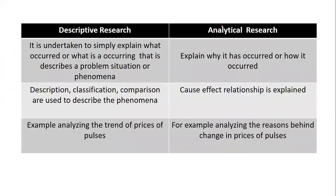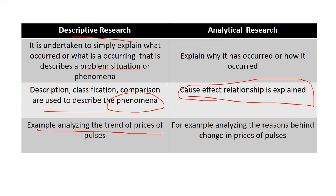Next is descriptive and analytical research. Descriptive research simply describes and explains the occurrence of a problem, solution, or phenomena, whereas analytical research explains why it is occurring — that is, explaining the reason, impact, and analysis behind the study. In descriptive research, description, classification, and comparison are used to describe the phenomena, while in analytical research, the cause-and-effect relationship is explained. For example, analyzing the trend of prices of pulses is descriptive, whereas explaining the reason behind the change in prices is analytical.